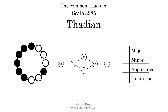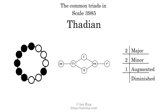Here are the common triads present in this scale. The diagram in the center is a graph of parsimonious voice leading between triads. There are 2 major triads, 2 minor triads, 1 augmented triad, and 1 diminished triad.